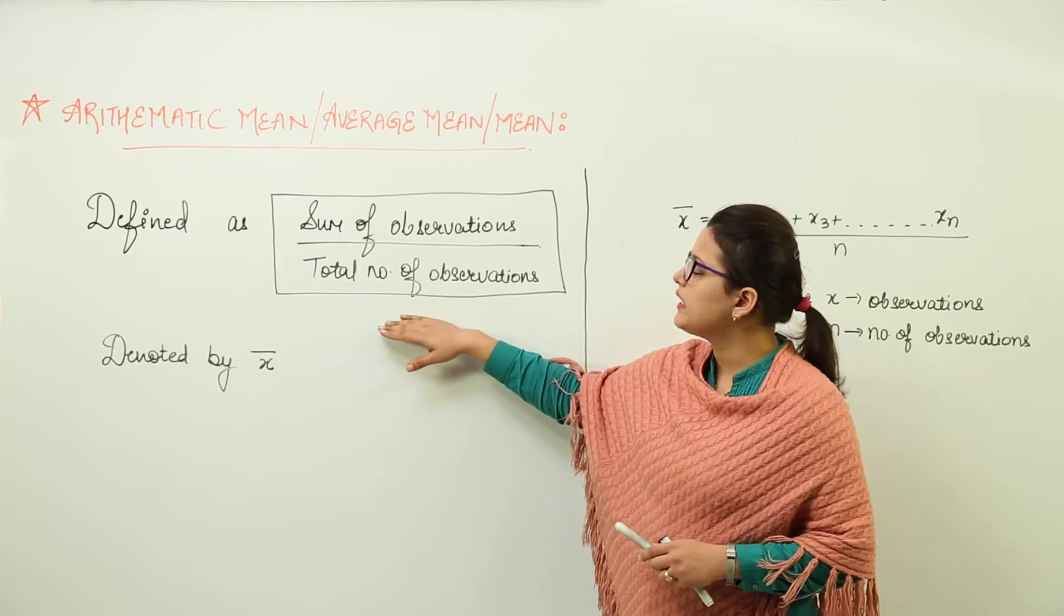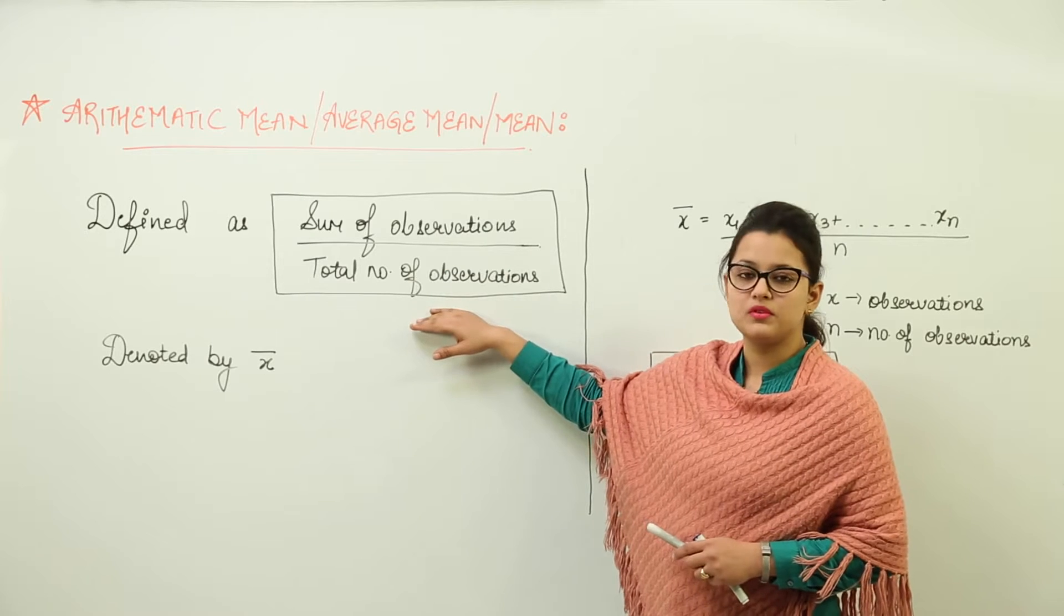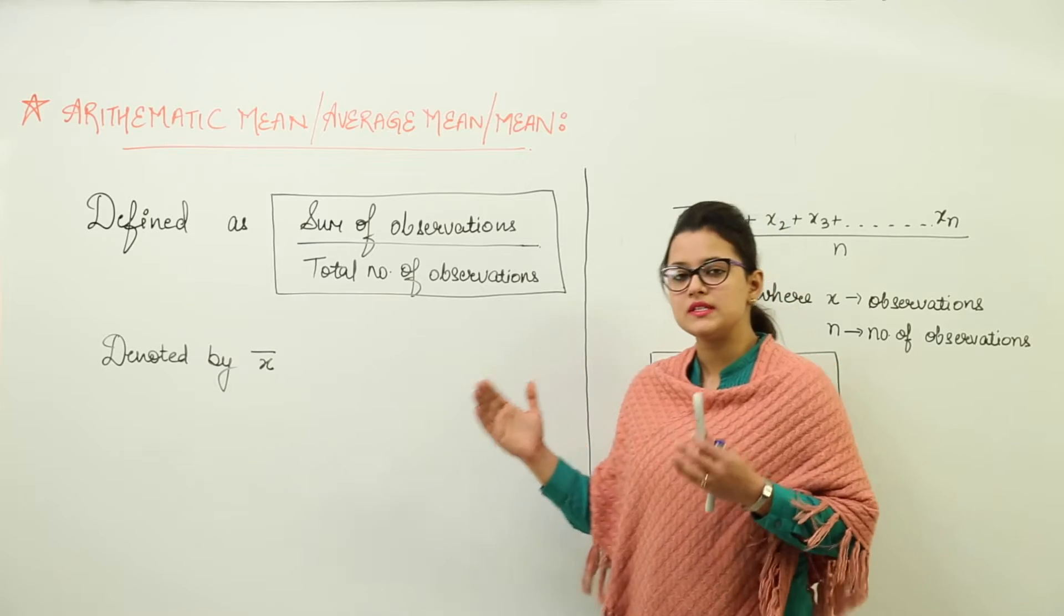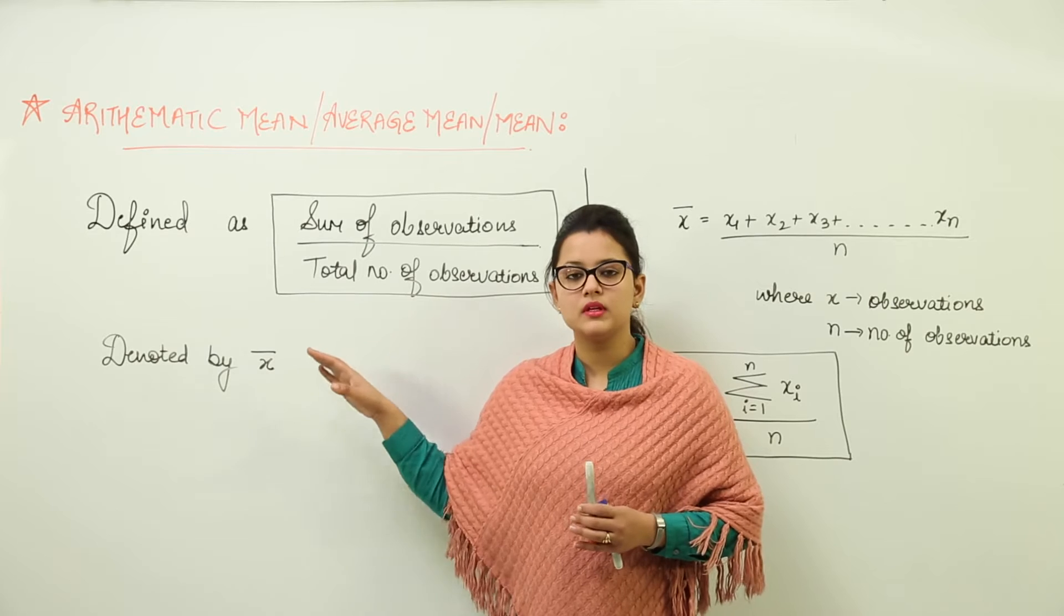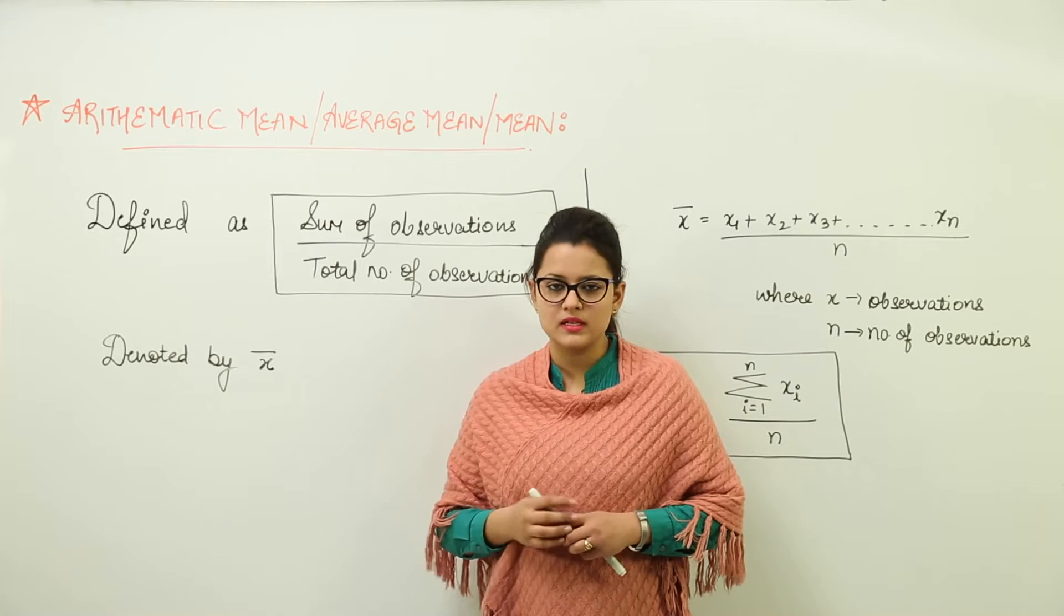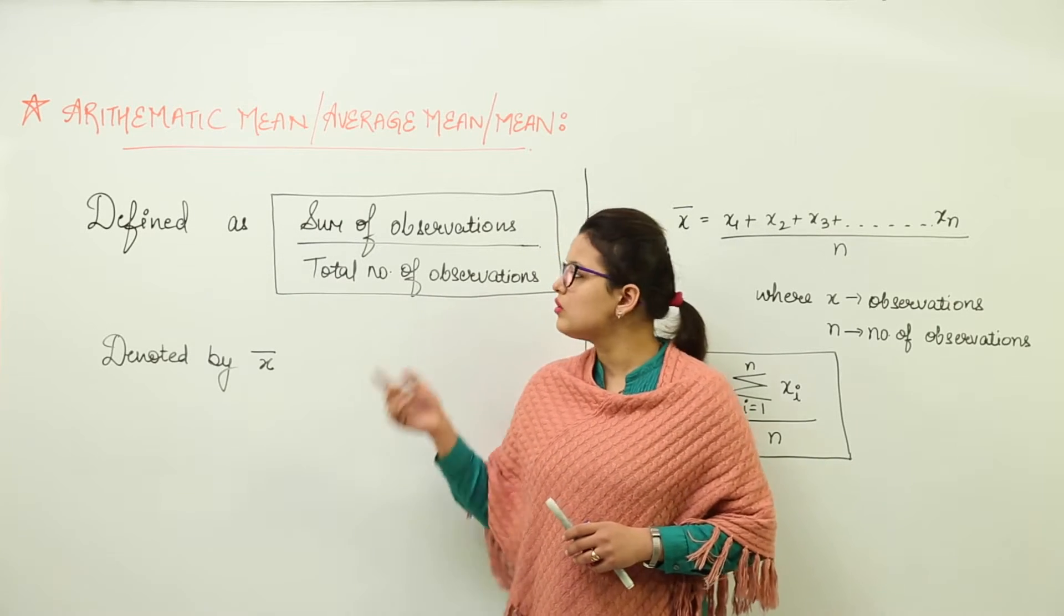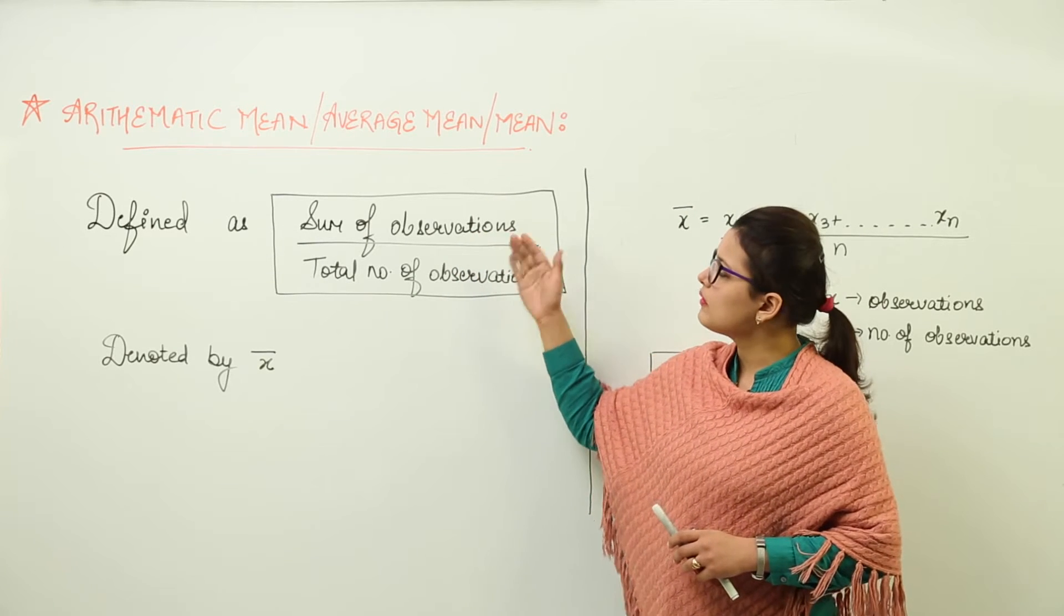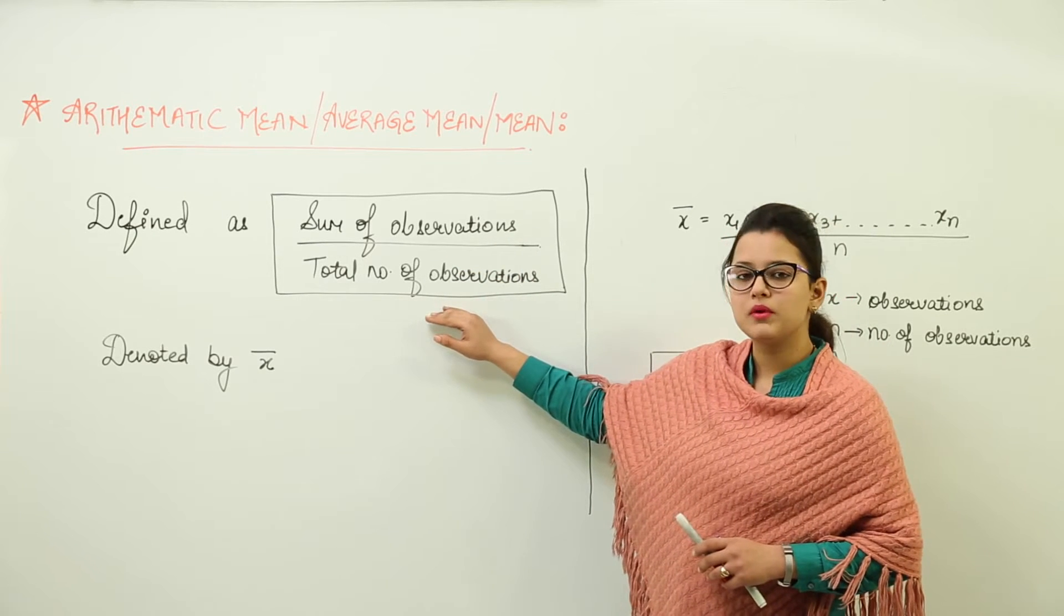So the mean is defined as sum of observations upon total number of observations. We all are familiar with the term observations now. So we can have an example in which many observations are given, and say the previous example that we have taken many times is the number of wickets that a bowler has taken. So the number of wickets the bowler has taken in each match is your observation. So what we do to find the mean of those? We take the sum of all observations and divide it with total number of observations.